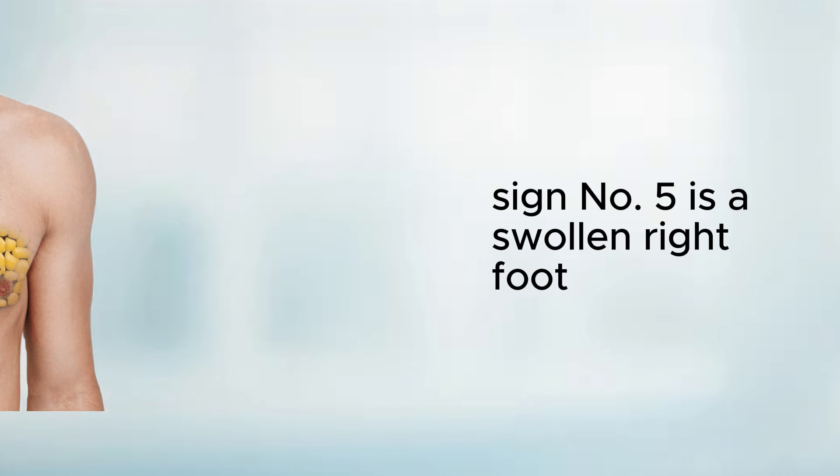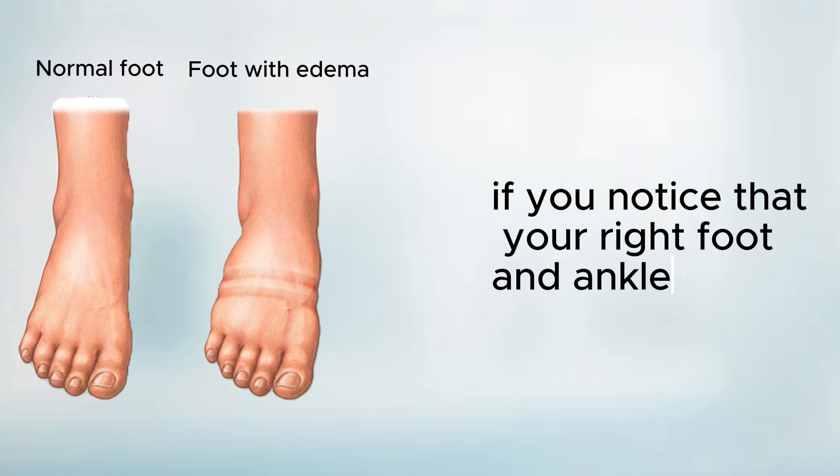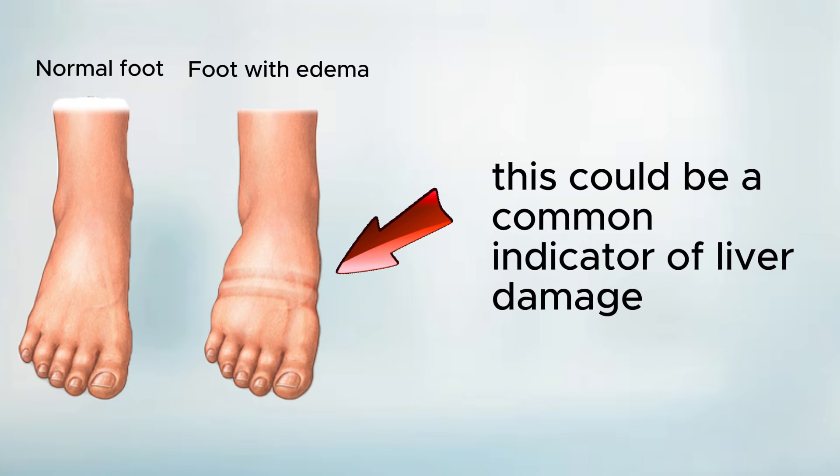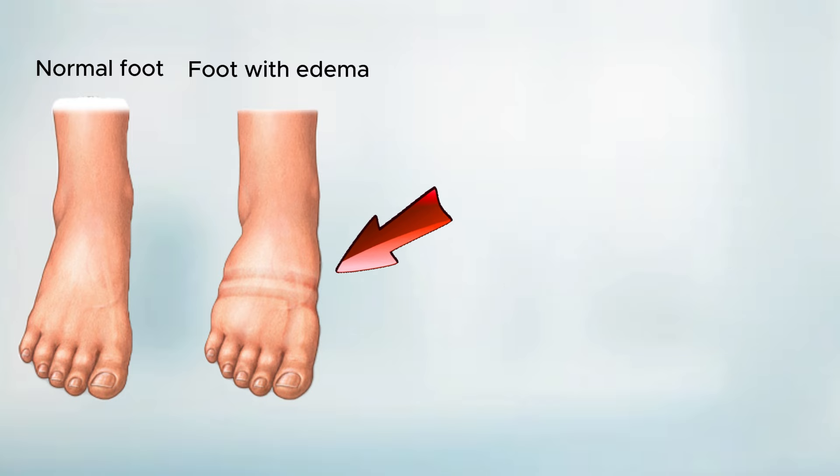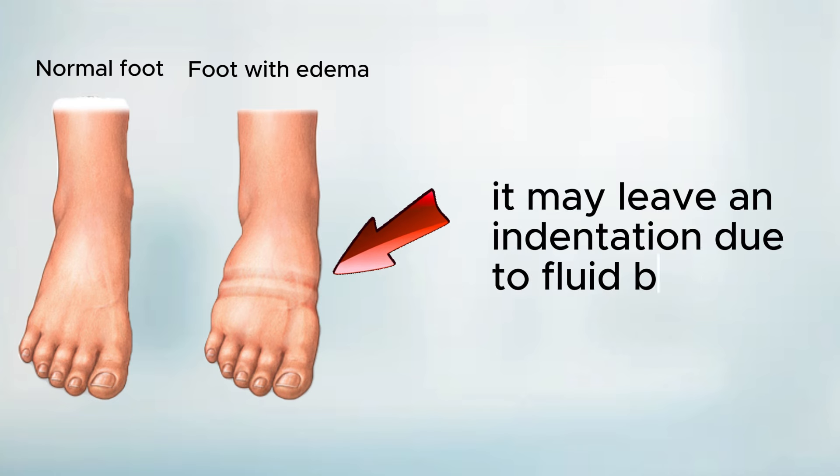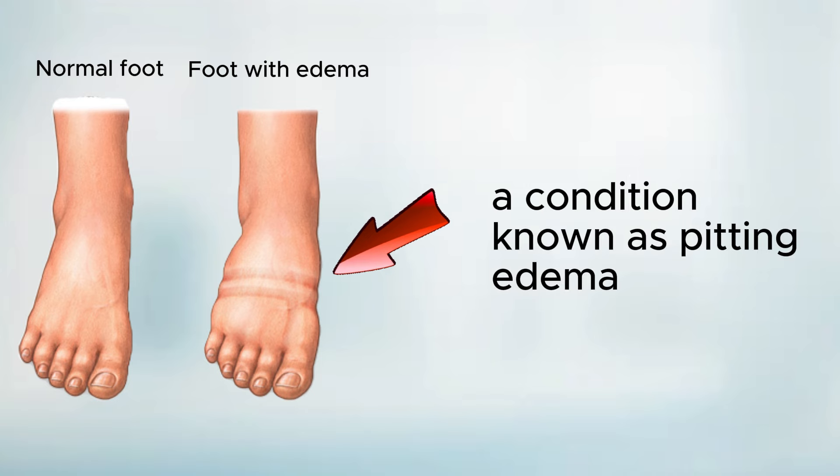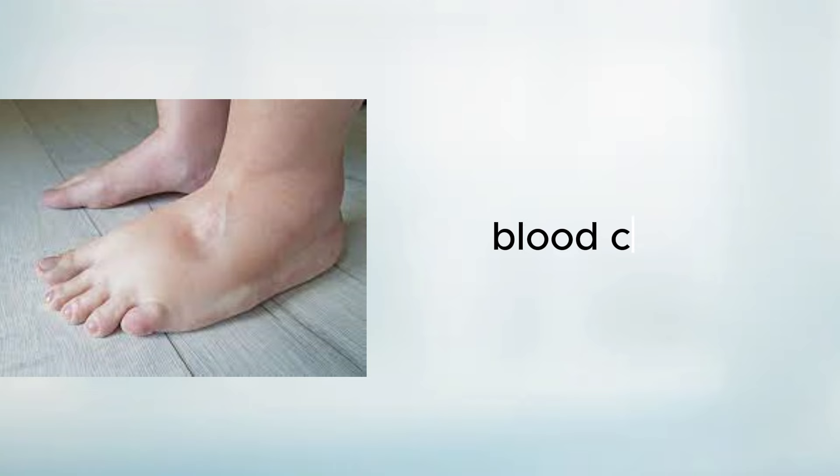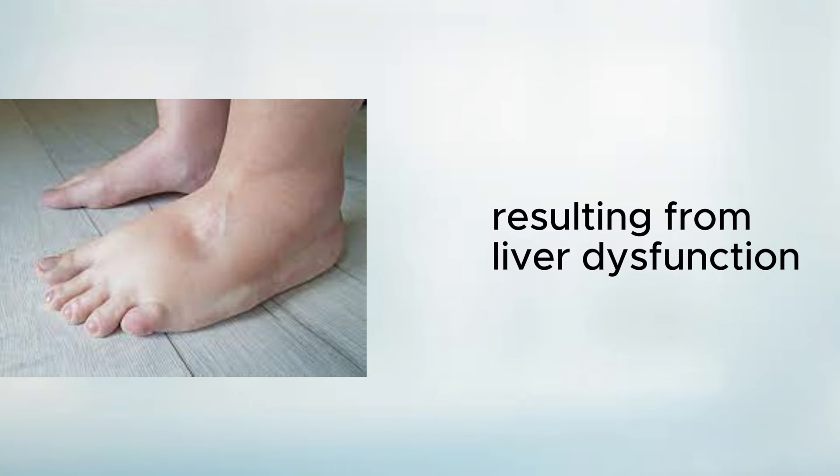Sign number five is a swollen right foot. If you notice that your right foot and ankle are noticeably more swollen than the left, this could be a common indicator of liver damage. When you press your finger into the swollen area on your foot, it may leave an indentation due to fluid buildup, a condition known as pitting edema. This swelling is attributed to compromised blood circulation, resulting from liver dysfunction.